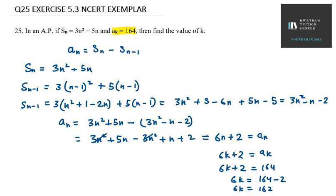Now what will be the k value? Using this method, 162 over 6, so this will be 27. K equals 27. This is your answer for question number 25.